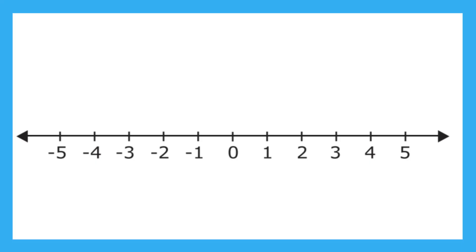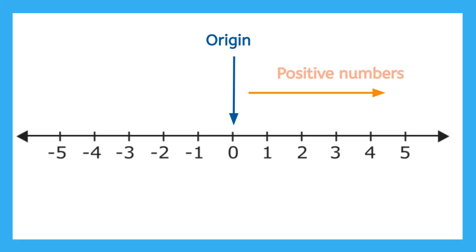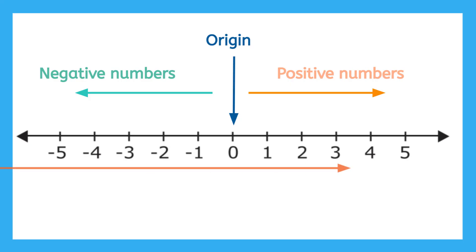Here's a quick review of a number line. Remember, here at zero, we also call the origin. And everything to the right of zero is a positive number, and everything to the left of zero is a negative number. We've also learned that as a negative number gets closer to zero, it gets bigger. And numbers on a number line get bigger as they go to the right.